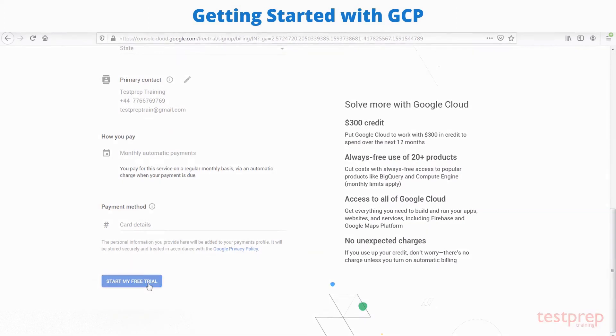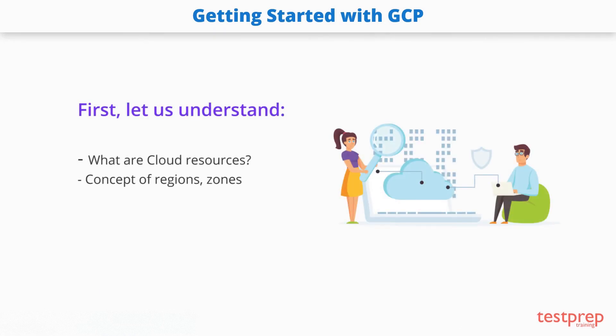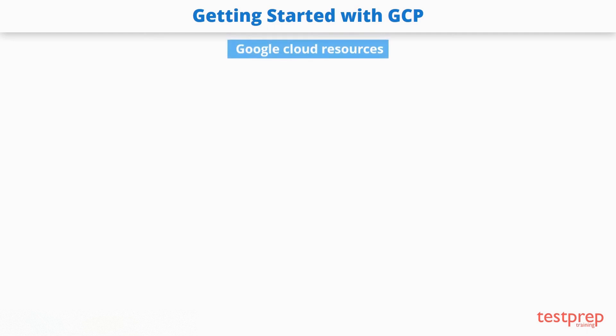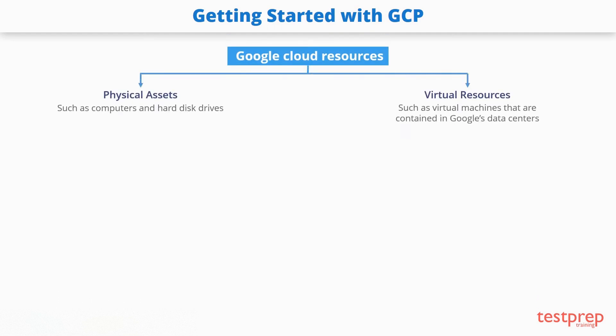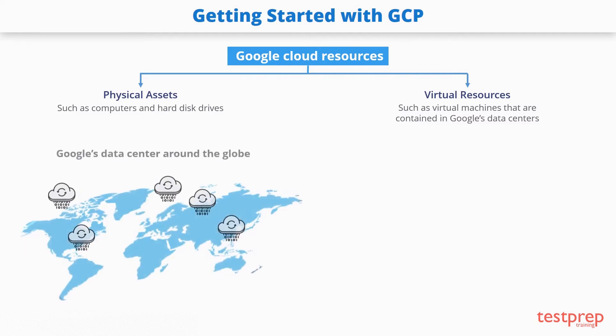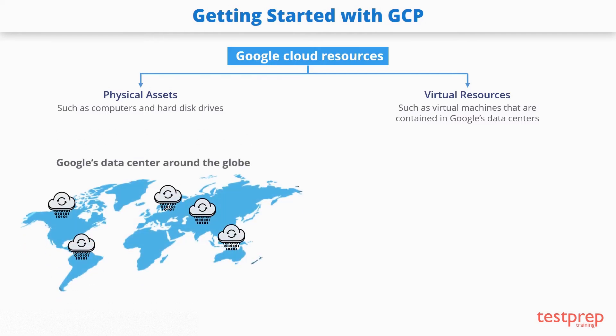Before getting to understand the Google Cloud Console and ways of interacting with Google Cloud Services, let us first understand the concept of cloud resources, regions, and zones. The Google Cloud Platform consists of physical assets, such as computers and hard disk drives, and virtual resources, such as virtual machines, that are contained in Google's data centers around the globe.